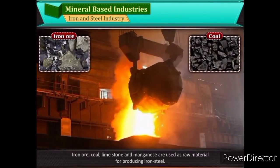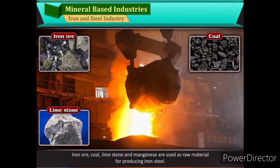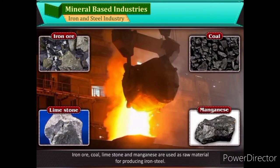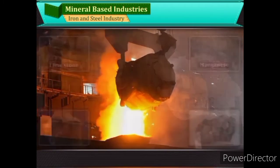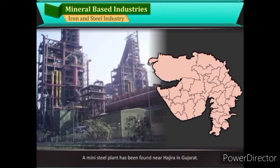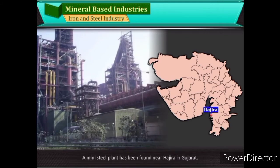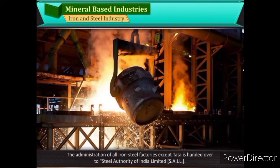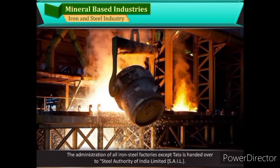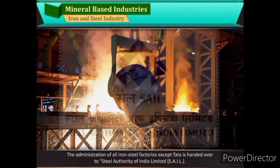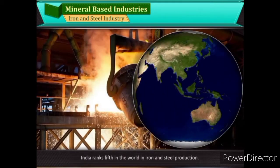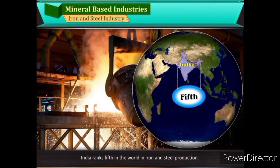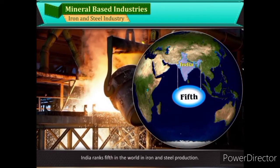Iron ore, coal, limestone, and manganese are used as raw material for producing iron-steel. A mini-steel plant has been founded near Hajira in Gujarat. The administration of all iron-steel factories except Tata is handed over to the Steel Authority of India Limited, SAIL. India ranks fifth in the world in iron and steel production.